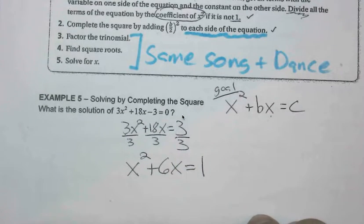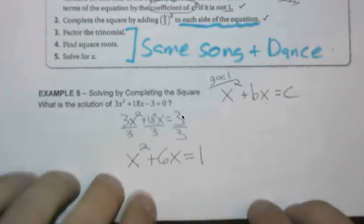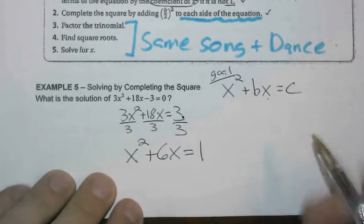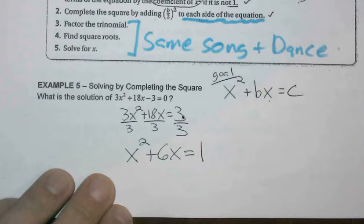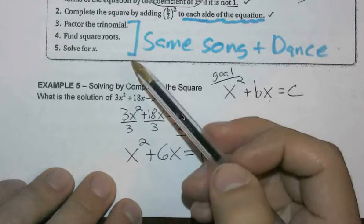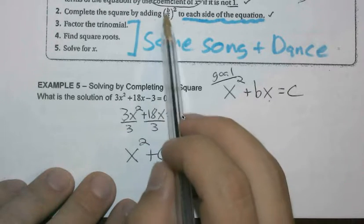So notice that factoring's kind of out the window at this point, because if we were going to move this over, we would have a trinomial that's very difficult to factor. So completing the square, as we can see, is pretty nice. So from here on out, same song and dance for the most part.